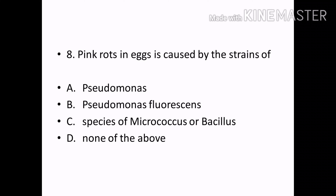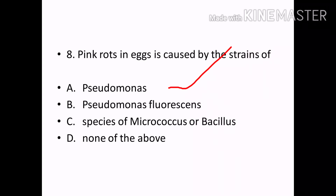Pink rots in eggs is caused by the strains of: Options — Pseudomonas, Pseudomonas fluorescence, species of Micrococcus or Bacillus, none of the above. Correct answer: Option A — Pseudomonas.